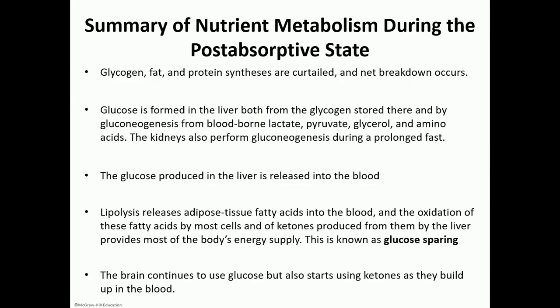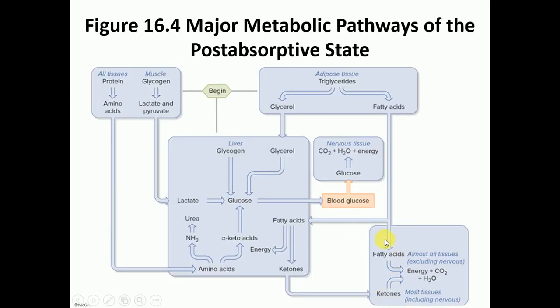Summary of the post-absorptive state: it is under the influence of glucagon — high glucagon, low insulin levels. There is a breakdown of all storages: glycogen breakdown is glycogenolysis, fat breakdown is lipolysis, and protein catabolism occurs as well. Glycerol and amino acids from these catabolic reactions are used to make new glucose in the liver — gluconeogenesis. That newly produced glucose is released into the body, spared for the nervous tissue, while the rest of the body uses ketones and fatty acids. If glucose runs out, the brain can also use ketones but cannot use fatty acids.